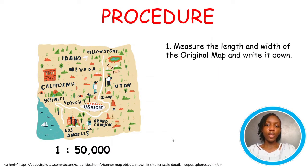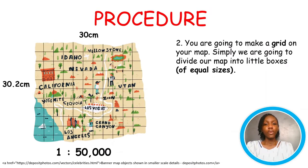The procedure for map reduction and enlargement is the same up to a point. So firstly, we need to measure the length and width of the original map and write it down. On measuring, we have 30 by 30.2. Mind you, these measurements are from an actual map.